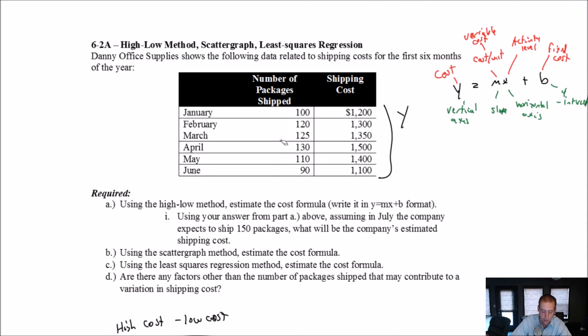We take the high cost minus low cost divided by high activity minus low activity. Now this is a bit of a misnomer. And I want you to be very careful. It's the cost associated with the highest activity point. And let me explain why we find the high and low activity levels. Don't find the high and low cost. In fact, we ignore costs for right now. I'm not even going to look.